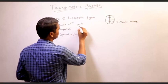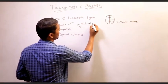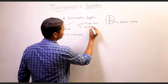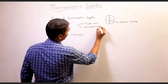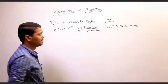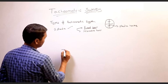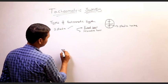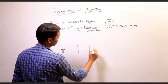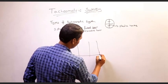Within the stadia system there are again 2 types: the fixed hair system and the mobile hair system. Let us talk about the fixed hair method. If you have a tachymeter here and you have some stadia staffs held vertical...